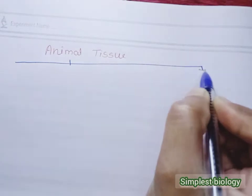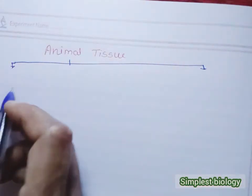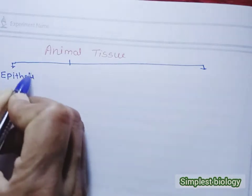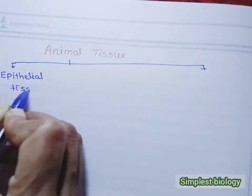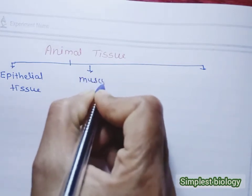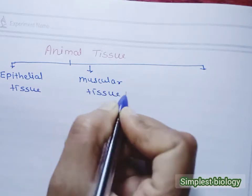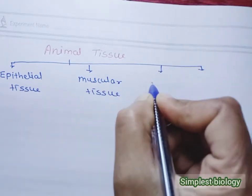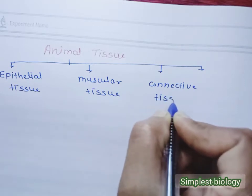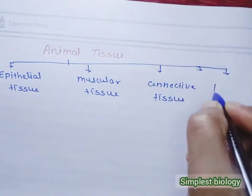Here, firstly we see the types of animal tissue. Animal tissues are divided into four main categories: first, epithelial tissue; second, muscular tissue; third, connective tissue; and the fourth one is nervous tissue.